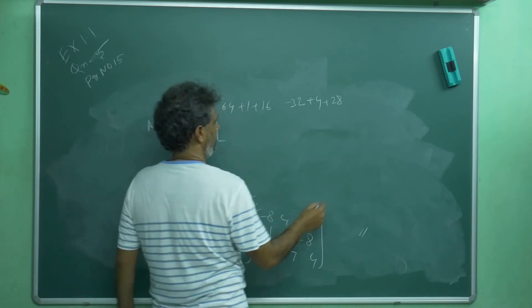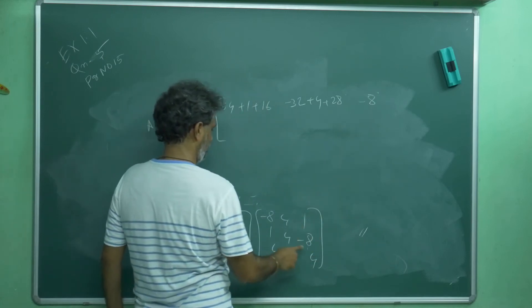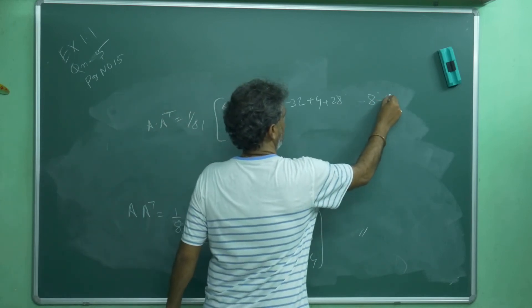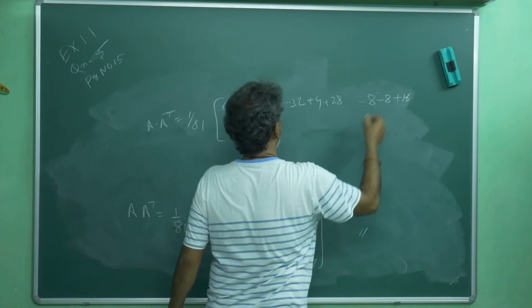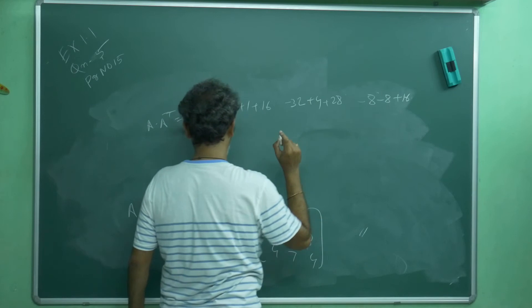Minus 8 into 1 is minus 8. 1 into minus 8, minus 8 is 16. How nicely getting 0, 0. This is 81. Here has 81. Here has 81 I want to get.